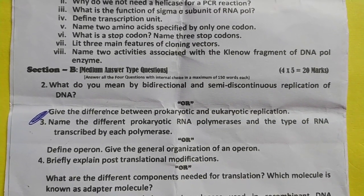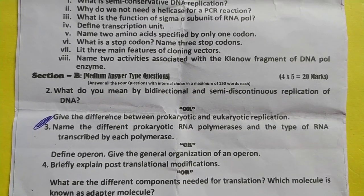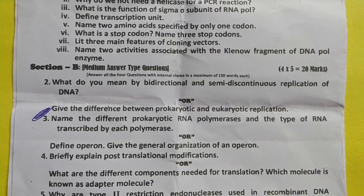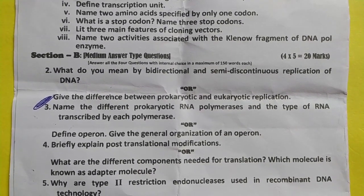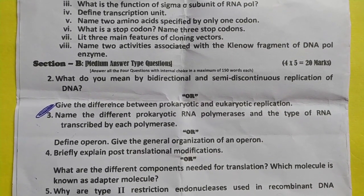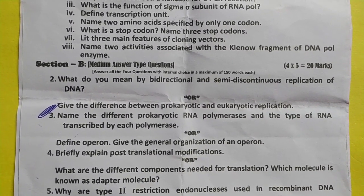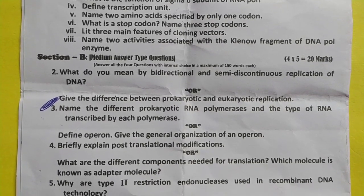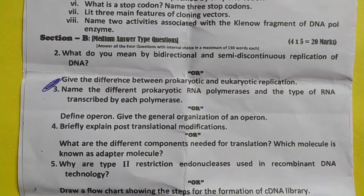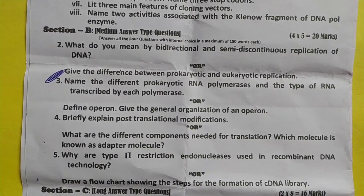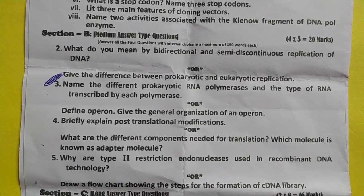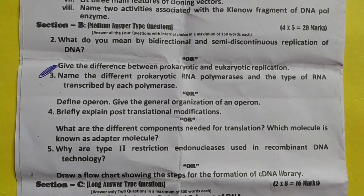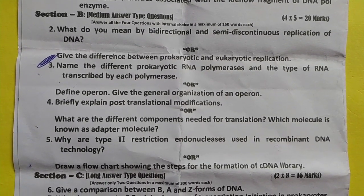Section B. Question one: What do you mean by bidirectional and semi-discontinuous replication of DNA? Give the difference between prokaryotic and eukaryotic replication. Name the different prokaryotic RNA polymerases and the type of RNA transcribed by each polymerase.